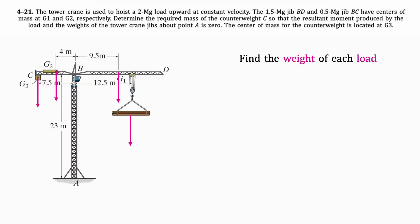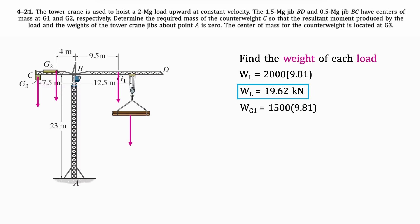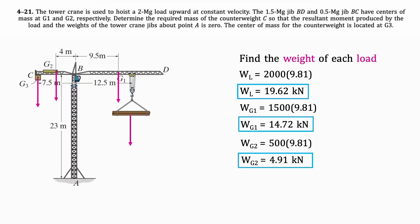First, we'll find the weight of each load by multiplying the mass times gravity. We're given the mass of the first load, which is 2,000 kilograms, multiplied by gravity, or 9.81. The result is 19.62 kilonewtons. Repeating the same steps using the given information for each jib, we get 14.72 kilonewtons for G1, 4.91 kilonewtons for G2, and 58.86 kilonewtons for G3.